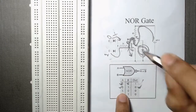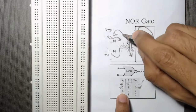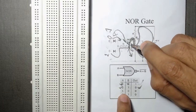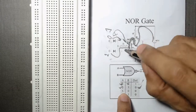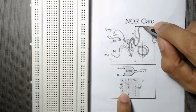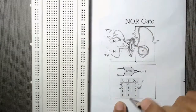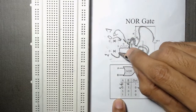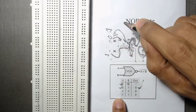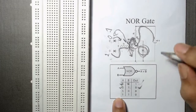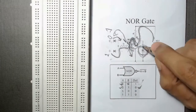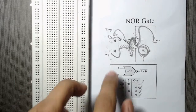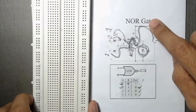Similarly, if A is 1, that diode will allow current to flow, the transistor base gets voltage, it turns on, and we get no output. If both A and B are 1, both diodes allow current, both currents go through the 1k resistor, the transistor turns on, and there is no output. This is how the circuit acts as a NOR gate.